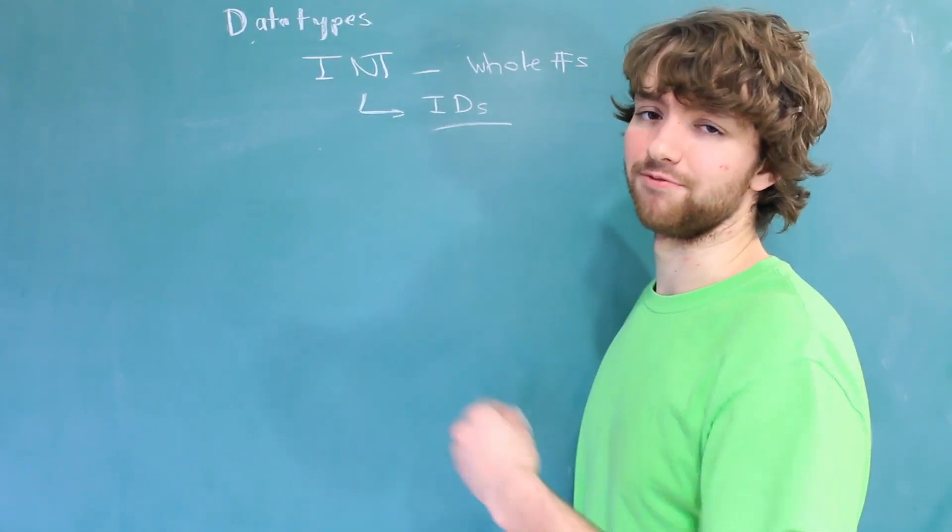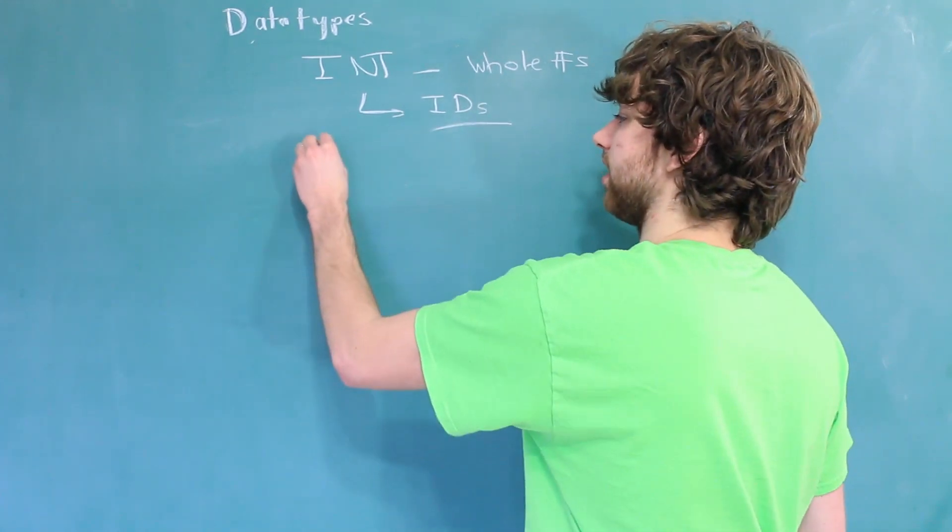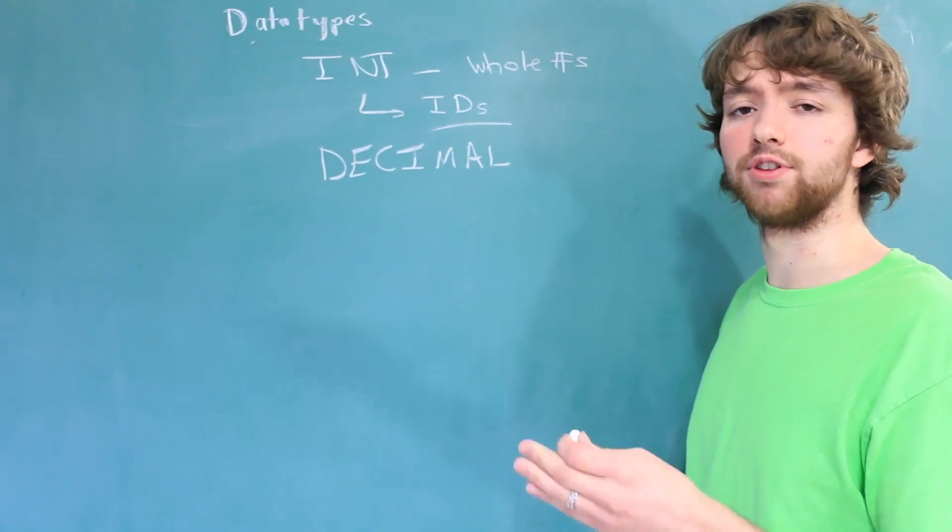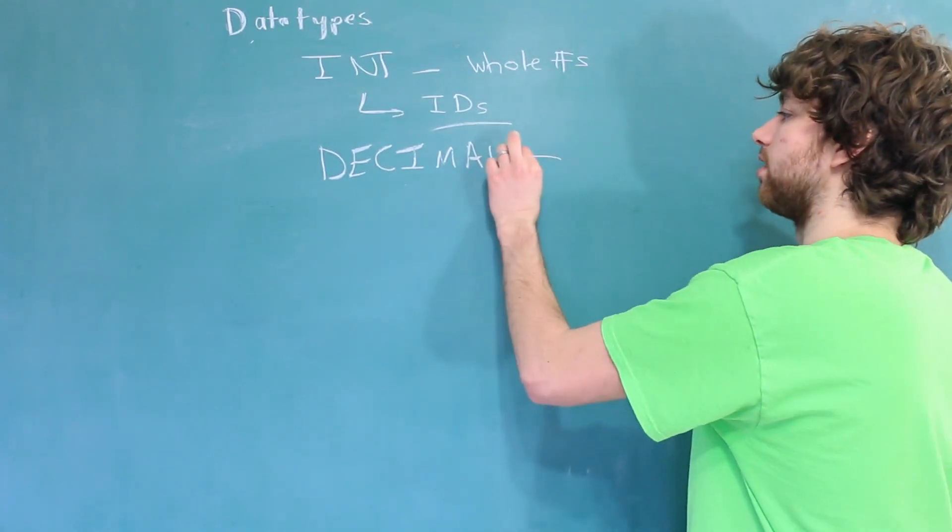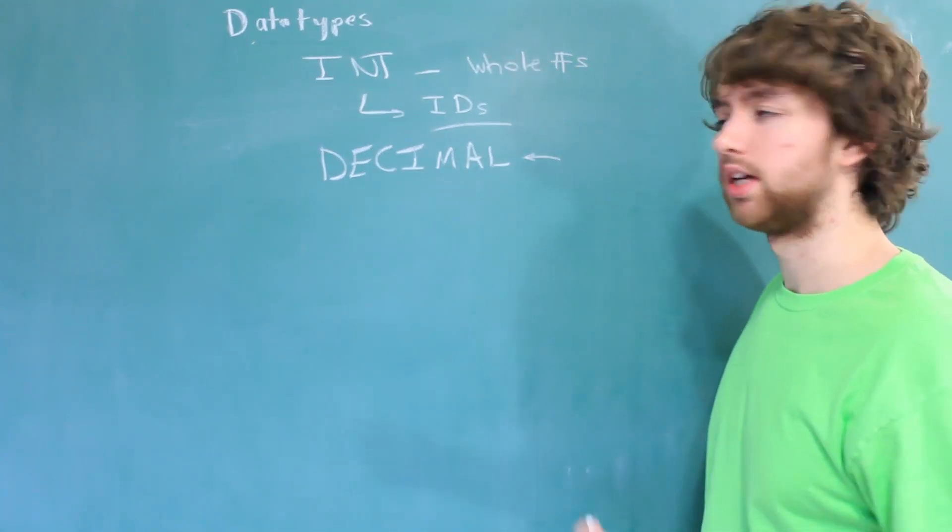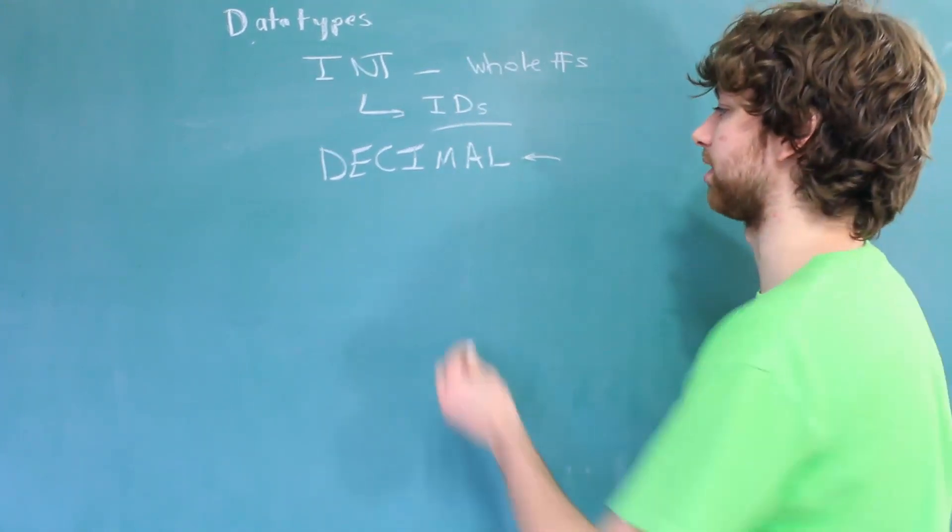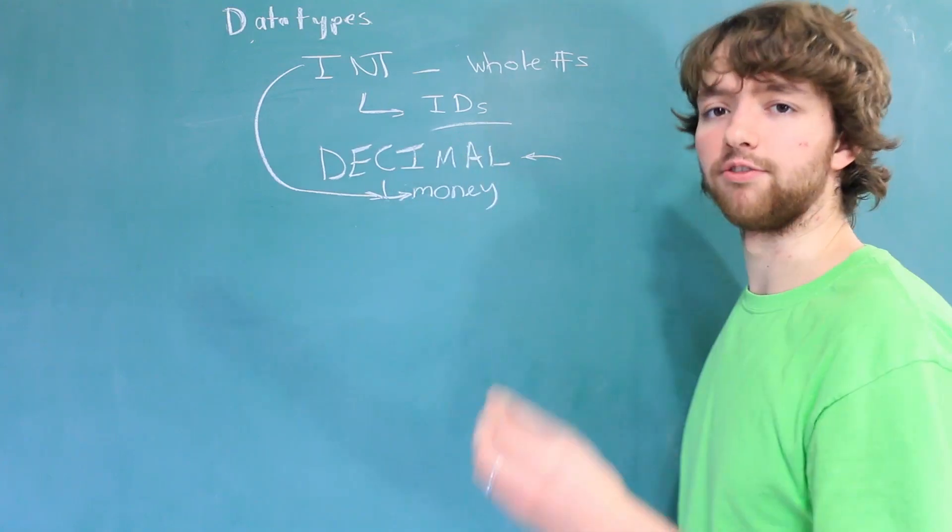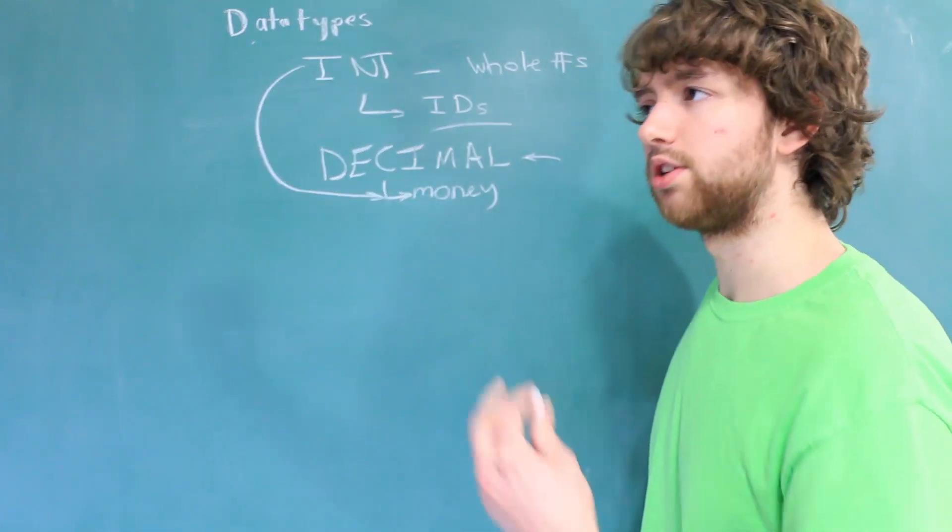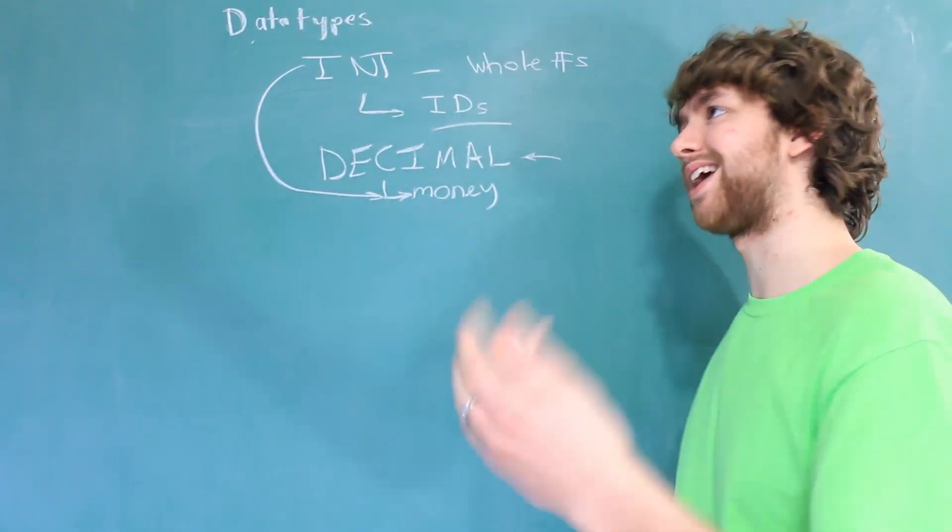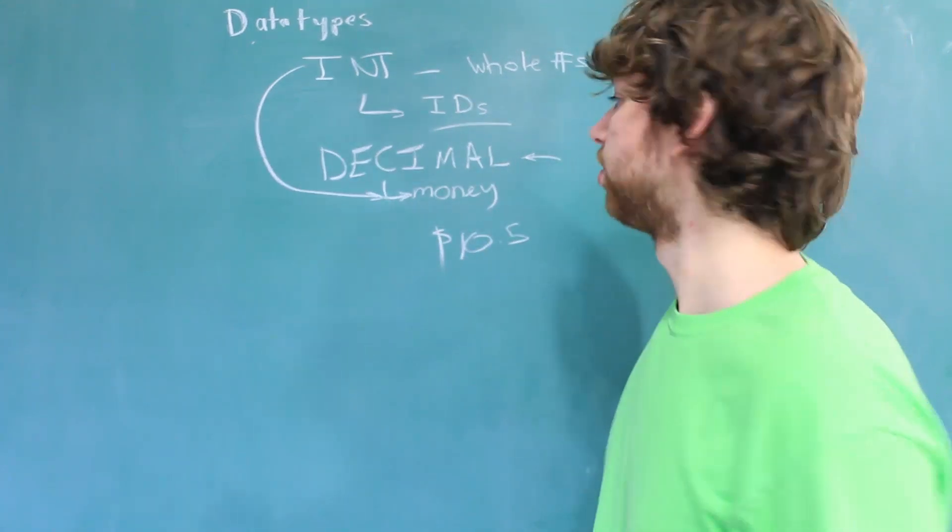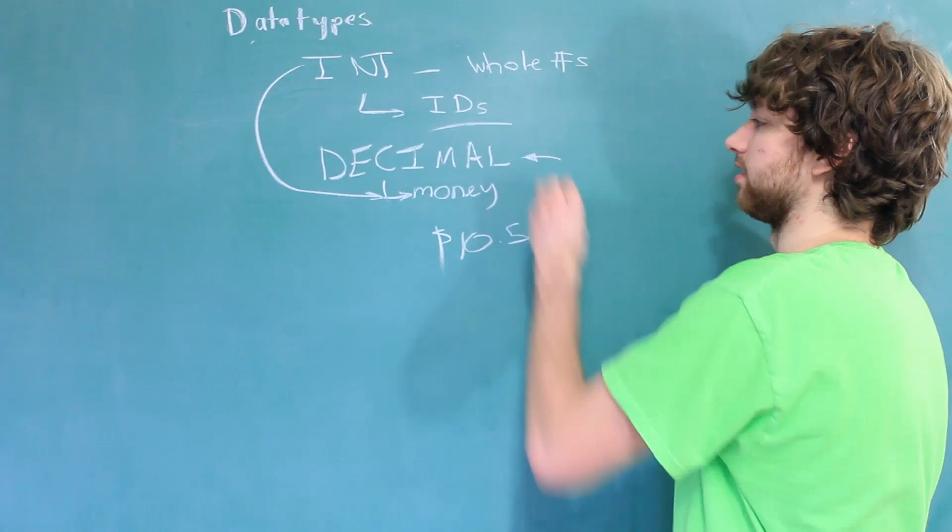If you do want to have data after a decimal, you can use the designated decimal type. This data type will allow for data after the decimal, and it can be used for perfect math. So that means if you're doing math with something like money. Now you can also use int for math, but the thing is int does not allow for anything after a decimal. So anytime you have numbers like 10.5, and you want to add that with another number, you will want to use the decimal data type.